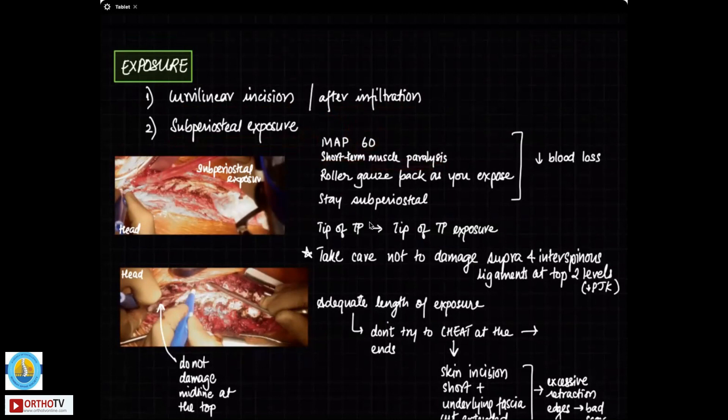As you progress with the exposure, use a roller gauze pack as you keep on going forward. This will prevent excessive blood loss and always, always stay subperiosteal. It is important not to get too much of blood loss during this stage of the surgery. Your exposure has to be from the tip of the TP to tip of the TP on the other side.